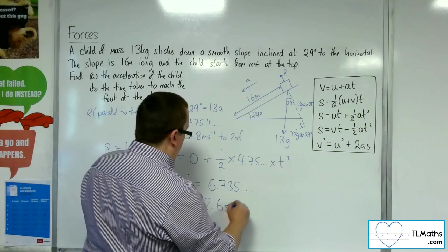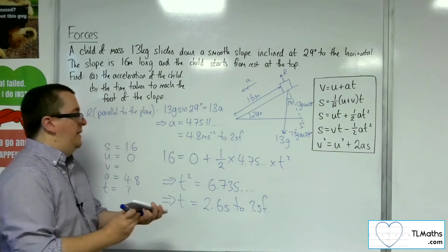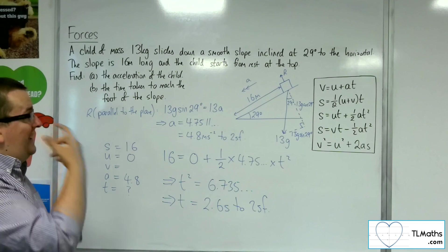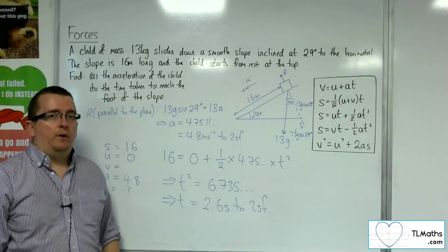And then square root both sides gets me 2.595, so 2.6 seconds to two significant figures. That's how long it takes for the child to reach the bottom of the slope.